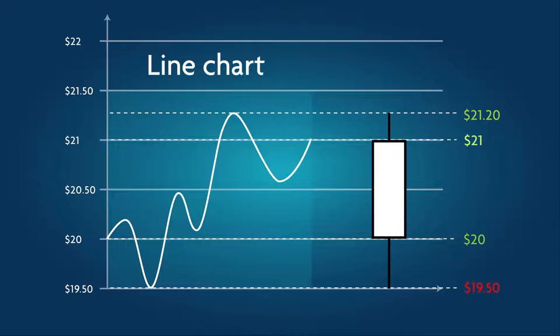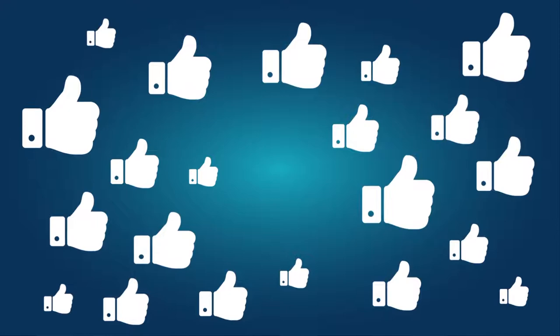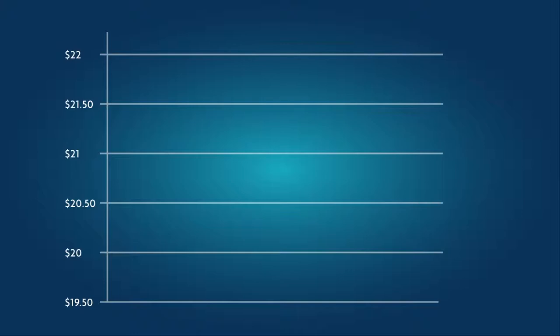Now, let's examine the candle itself. We see a clear or white body, which means that the price closed up for the day. The opening price is represented by the base of the candle body, the close is marked by the top of the body, and the topping and bottoming tails indicate the day's high and low, respectively. In other words, this single Japanese candlestick has done a remarkable job of summarizing an entire day's worth of data from the line chart.